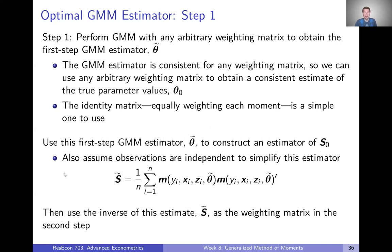If we further assume that observations are independent — which we will in this class — we can estimate the S matrix, calling it S̃, by taking basically the sum of squares of the sample moments evaluated at the first-step GMM estimator theta tilde. We plug theta tilde into that expression to calculate an estimate of S₀, which we'll then use to construct our second-step weighting matrix.